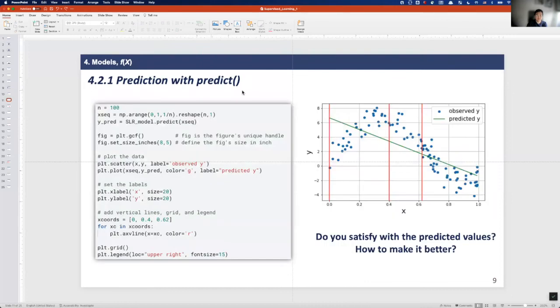With this simple regression model, we can easily make predictions. Here I simulate 100 random x-values and plot the result. Please check the code line to see how I create this figure. The green line shows the predictive value from our simple regression model.